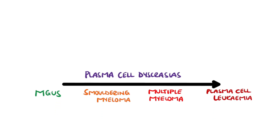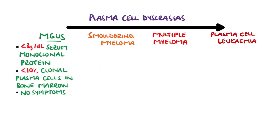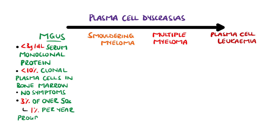MGUS is where monoclonal proteins are detected either in the serum or in the urine, but there are no signs or symptoms. It is present in 3% of people over the age of 50, and it progresses to multiple myeloma in around 1% of people per year.